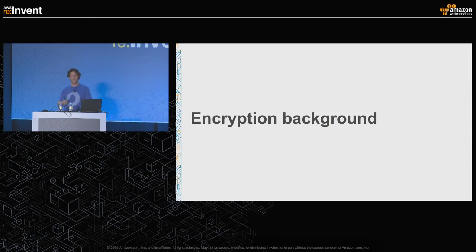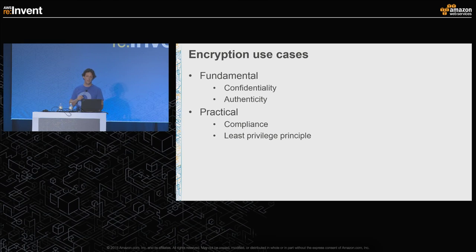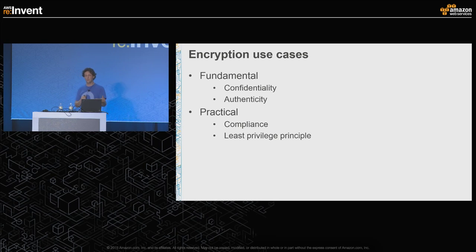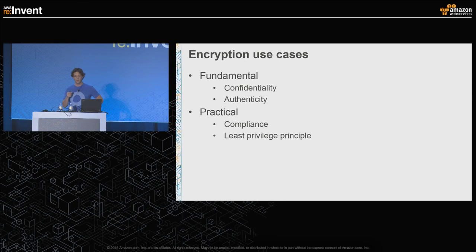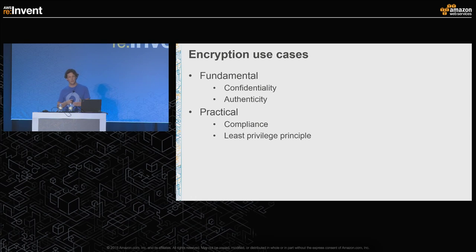Alright, enough of the sales pitch — let's dig into some crypto. Why do we use encryption in the first place? From a fundamental perspective, we're using crypto because we want data confidentiality — we want to limit access to that data to only the people who have access to the keys. With newer algorithms you may also get authenticity guarantees and be able to validate that no one has changed or altered that data either in transit or at rest.